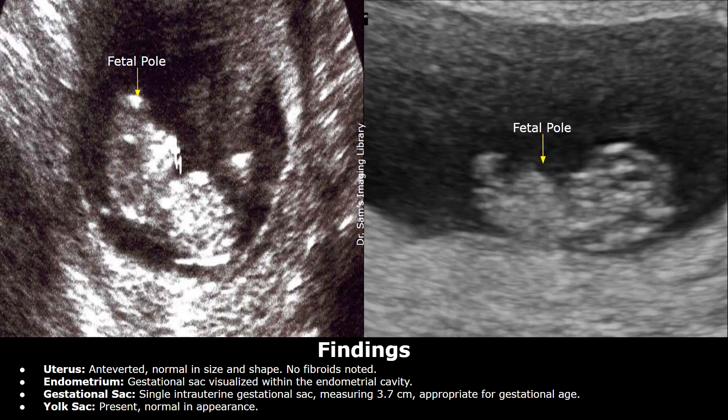Then we can write about the endometrium, mentioning the presence of a gestational sac in the endometrial cavity. Endometrium: gestational sac visualized within the endometrial cavity. After this, we can write about the gestational sac. Gestational sac: single intrauterine gestational sac measuring 3.7 cm, which is the mean sac diameter, appropriate for gestational age.